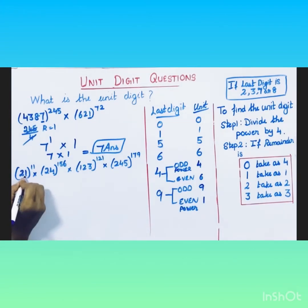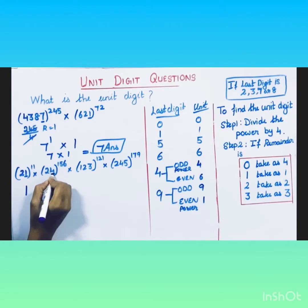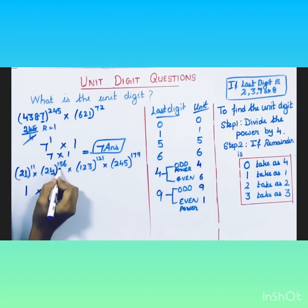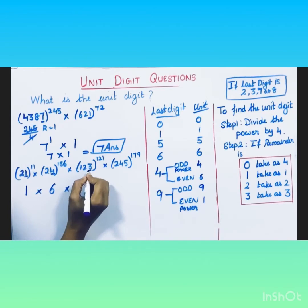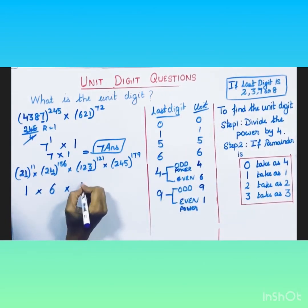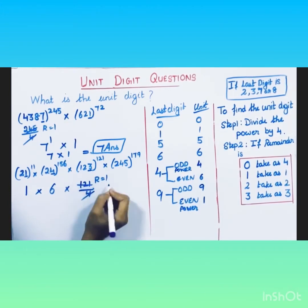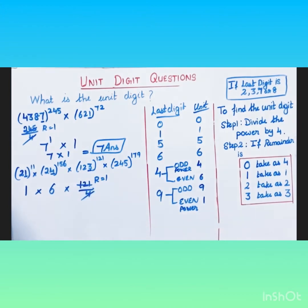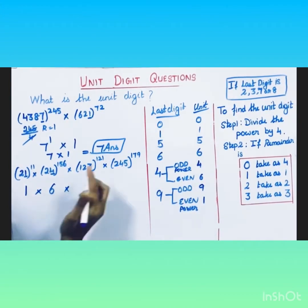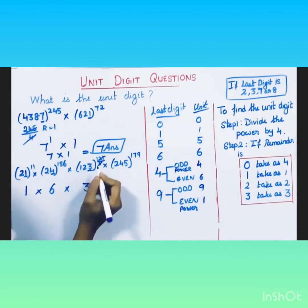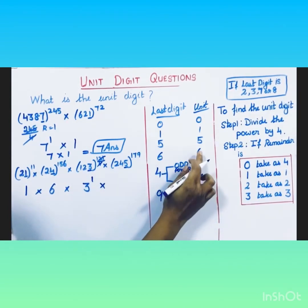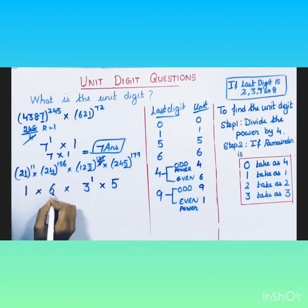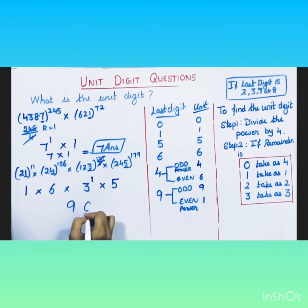In the next example: last digit is 1 → unit digit 1; last digit is 4 with even power → unit digit 6; last digit is 3, take the power and divide by 4 — remainder is 1, so unit digit is 3 (3^1 = 3); last digit is 5 → unit digit 5. Now multiply: 1 × 6 = 6, 6 × 3 = 18, 18 × 5 = 90 (unit digit 0), so the unit digit of this product is zero.